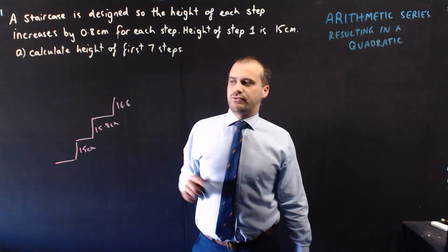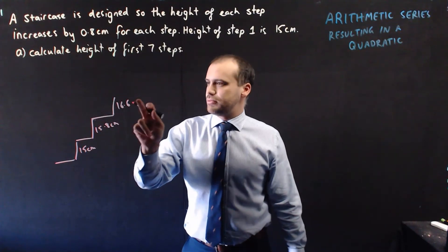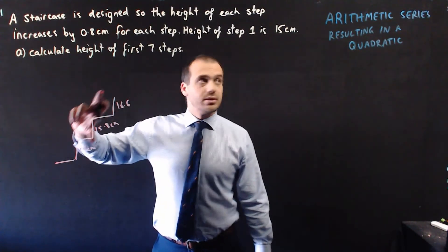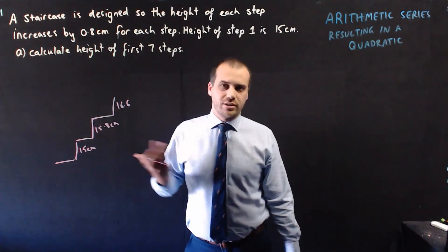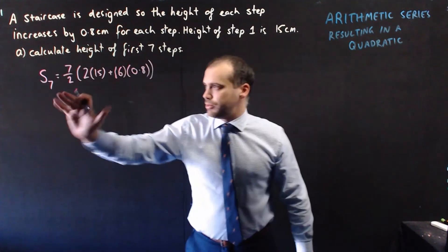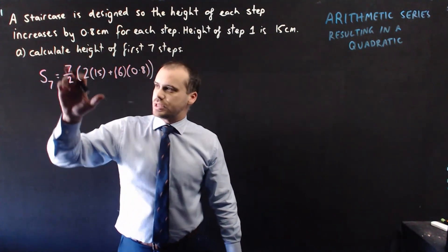Calculate the height of the first seven steps. Alright, so let's use, this is clearly an arithmetic series. If we add all of those values together, we'll have the height of the first seven steps. So, we're using our series formula here. The sum of the first seven steps is equal to seven over two, bracket two times the first step,